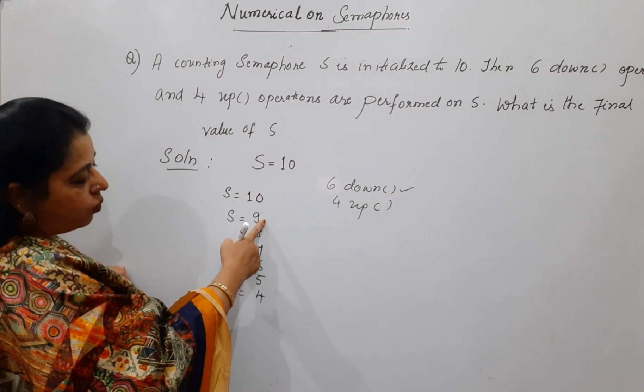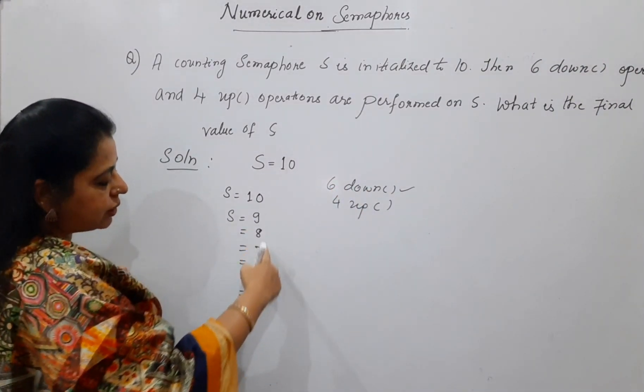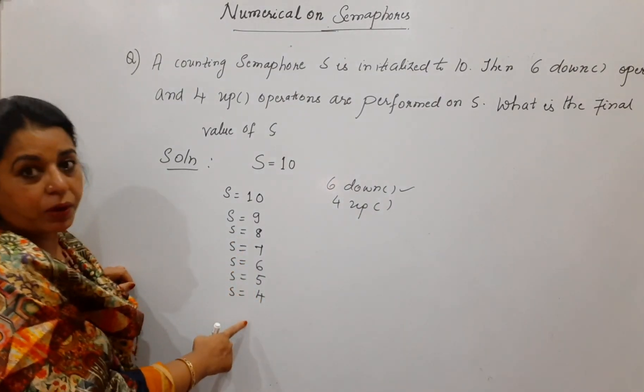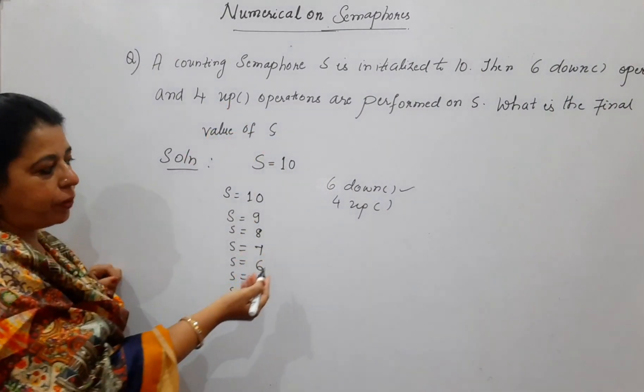How many times you are going to do? 1, 2, 3, 4, 5, 6. Why? Because in the problem it is given perform 6 down operations. So, your semaphore value has become now S equal to 4. After that it says that followed by 4 up operations.